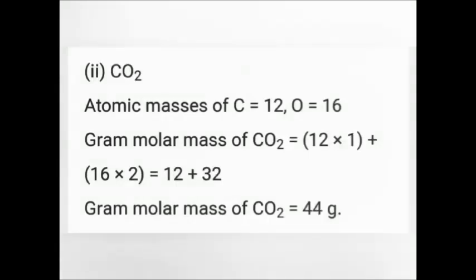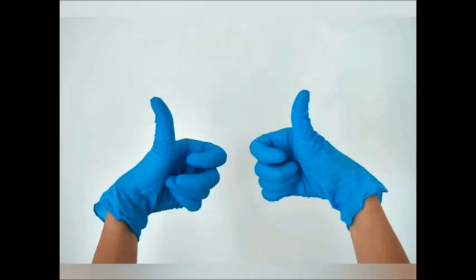Calculate gram molar mass of carbon dioxide, CO₂ — 1 carbon, 2 oxygen. Atomic mass of carbon is 12; atomic mass of oxygen is 16. So: 1 × 12 + 2 × 16 = 12 + 32 = 44. Gram molar mass of carbon dioxide is 44 grams.